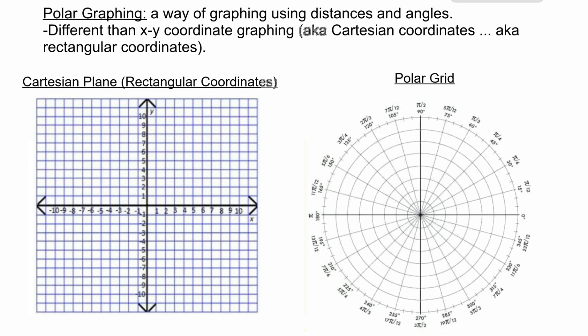This will be our introduction to polar graphing. Polar graphing is a way of graphing using distances and angles. It's different than what we're used to graphing on. What we've been graphing on for all of our algebra life up until this point is the Cartesian plane, a rectangular coordinate system. Typically when we graph in the rectangular coordinate plane, if we're going to graph point (3,5), we go over 3, up 5, and there's our point (3,5).